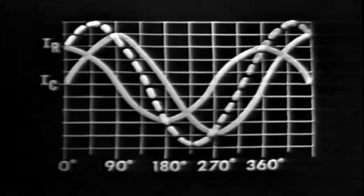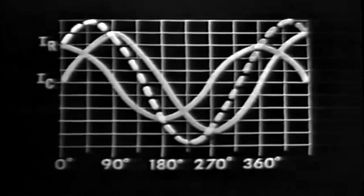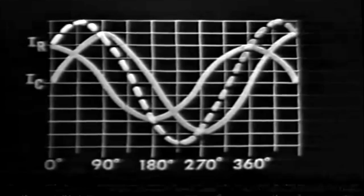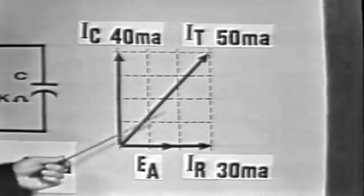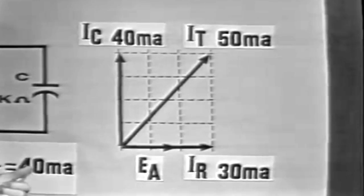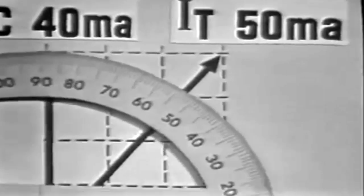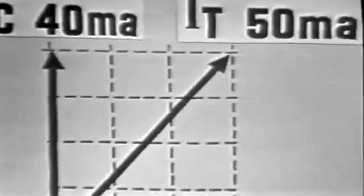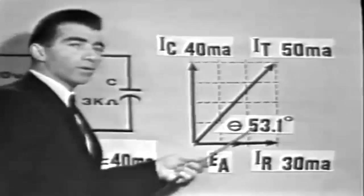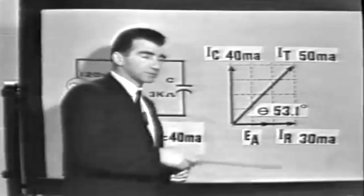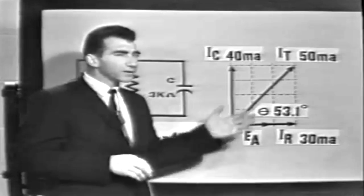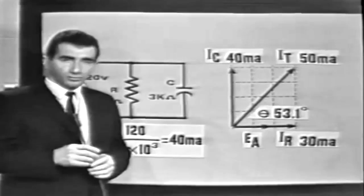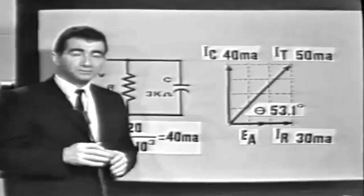The total current is greater than either branch current and less than the arithmetical sum, and the phase difference is something less than 90 degrees. The approximate phase angle may be found by measuring angle theta — the angle between the total current and the reference EA — using a protractor on the vector drawing, giving approximately 53 degrees. The exact angle is 53.1 degrees. The graphical solution is approximate at best and would be difficult to handle in a more complex circuit. Impedance vectors are not used in this parallel circuit because a series equivalent would first have to be developed.